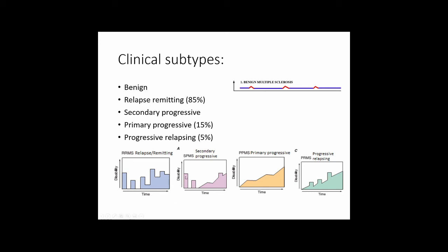Secondary progressive MS involves progressive development of the disease without relapses — for example, muscle weakness that doesn't improve and gets worse over time — following an initial relapse-remitting course. The risk of a person with relapse-remitting MS developing secondary progressive is about 2% per year.